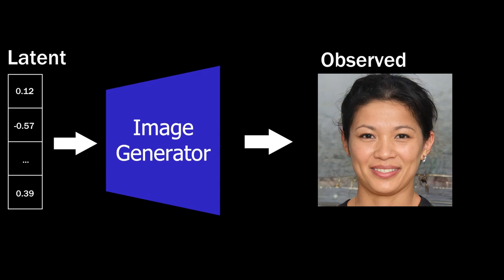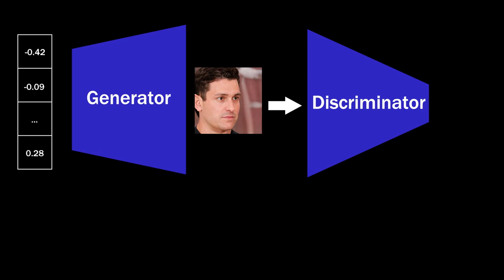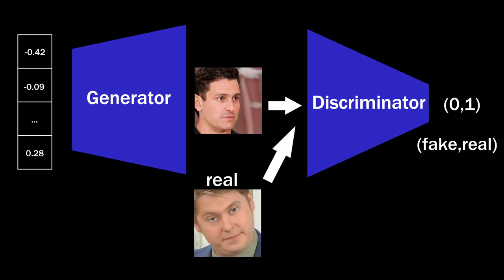We don't care what the latent input is, but the model does and should map different inputs to different images. There are a lot of different methods for doing this, but a classic one is known as a GAN — a generative adversarial network. At a high level, two neural networks are pitted against one another, where one network, the generator, is tasked with generating images, and the other, the discriminator, decides whether a given image is real or generated. The generator is fed random noise and produces an image, while the discriminator is fed an image and outputs a single value between zero and one, representing its best guess as to whether the given image is real or fake. We give it both real images from our dataset and fake images made by our generator.